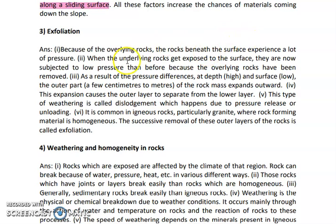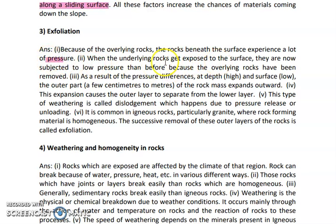The next short note is on exfoliation. Exfoliation is basically seen in hot areas with high pressure. The rock which is beneath — in the interior — experiences a lot of pressure. The surface rocks exert pressure on the inner rocks, causing expansion of the rock. As a result, the pressure difference is high at depth and low at the surface. The outer part — a few centimeters or meters — starts expanding outwards and separating from the lower layers.